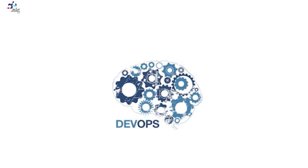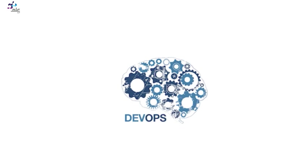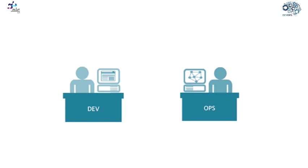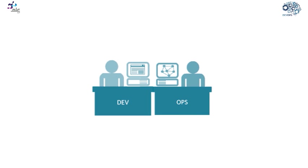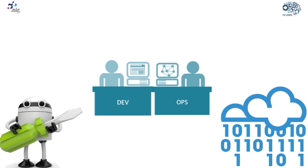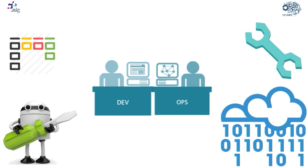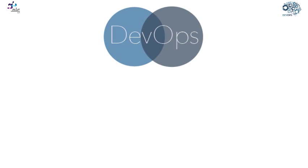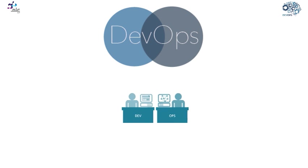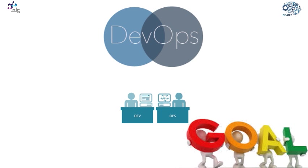DevOps is a fairly new term that is overused nowadays and brings misconceptions. Is it development and operations collaboration? Or is it treating your code as infrastructure? Or is it using automation? Or using Kanban? Or a tool-chain approach? Or a culture change? DevOps is a blend of two different worlds into one new responsible team with one unified goal.